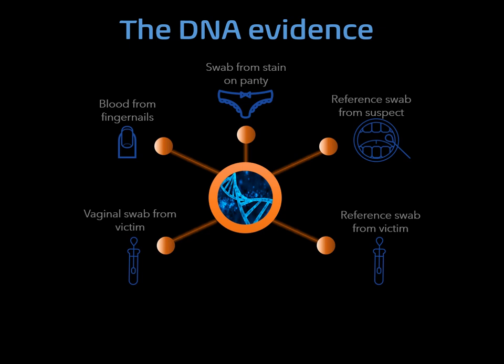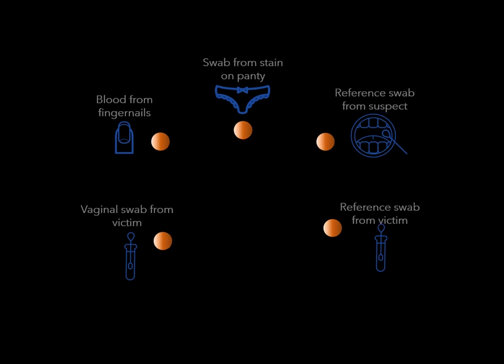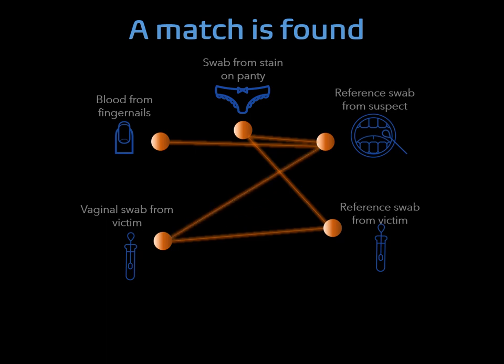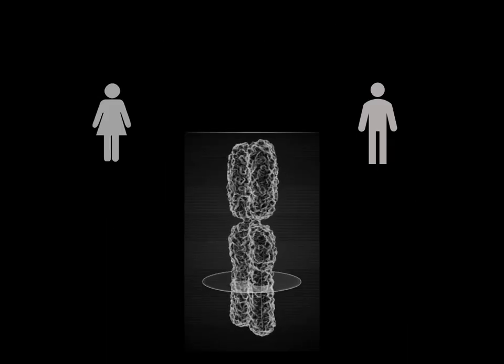From the DNA profiles obtained, we found that the DNA profile from the stain on the underwear and the blood underneath the fingernails matched the DNA profile obtained from the buccal swab from the suspect. The female portion of the vaginal swab resulted in a DNA profile matching the victim, and the male portion of the vaginal swab resulted in a DNA profile matching the buccal swab from the suspect. The evidence seems quite clear, right?